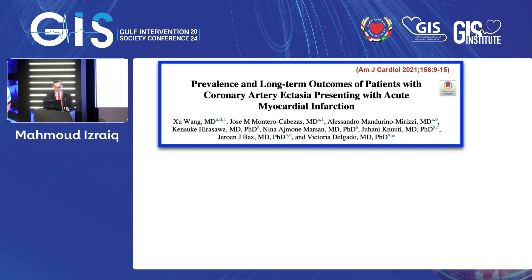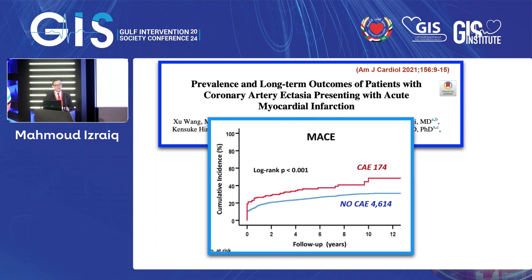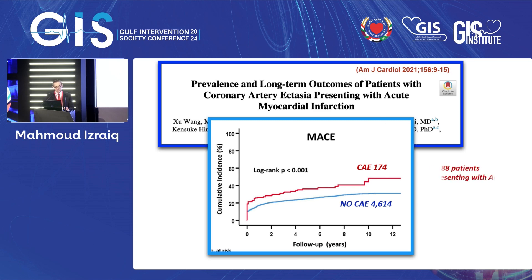This is a retrospective cohort trial evaluating patients with acute coronary syndrome and acute MI plus coronary ectasia versus no ectasia. The study found that mortality is higher in patients with coronary ectasia and MI — so they have a worse prognosis.